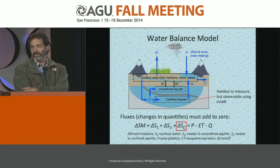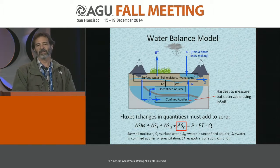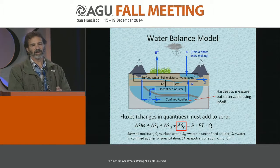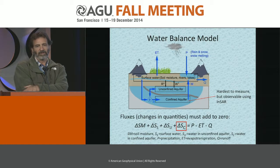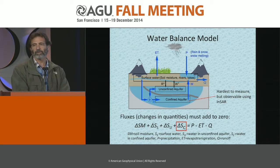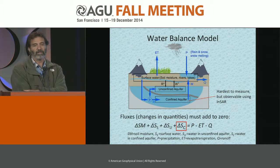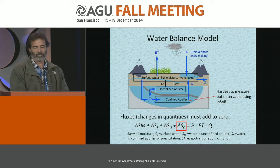A water balance model is simply identifying all the various sources, sinks, and storage places for water in a given system. At the scale of a basin — typically tens to hundreds of kilometers in size — there'll be water on the surface, water just under the surface as part of what we call an unconfined aquifer because there's no top to it, and soil moisture as well as shallow wells. Often there's a layer of more impermeable material underneath, called the confining layer, and below that sits the confined aquifer. The confined aquifer is the hardest to understand because it's the deepest, but it happens to be the one that INSAR responds to.